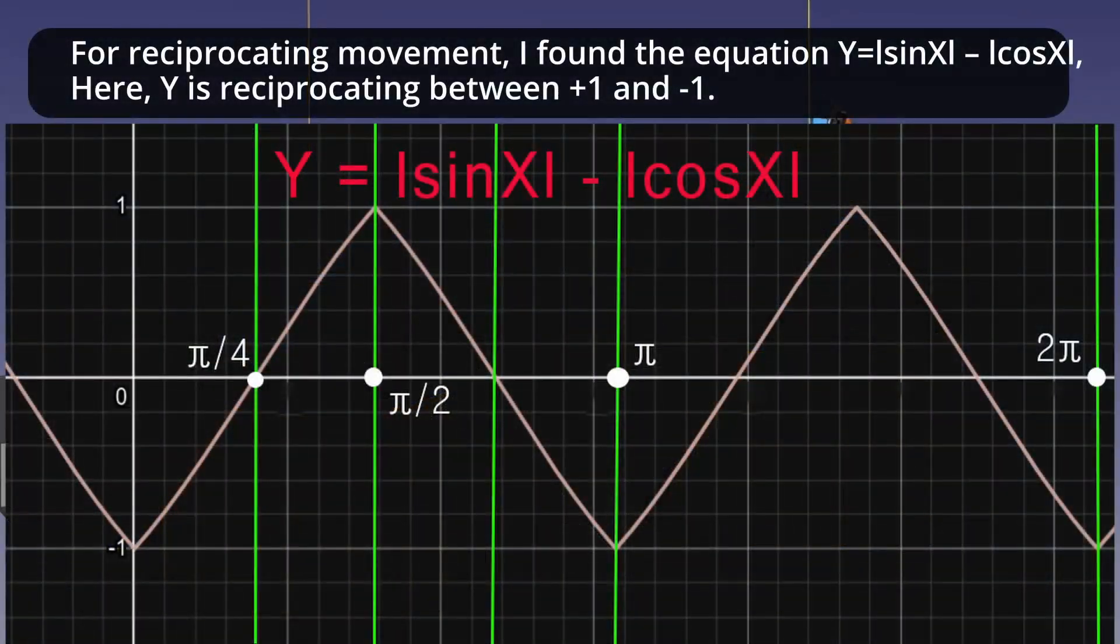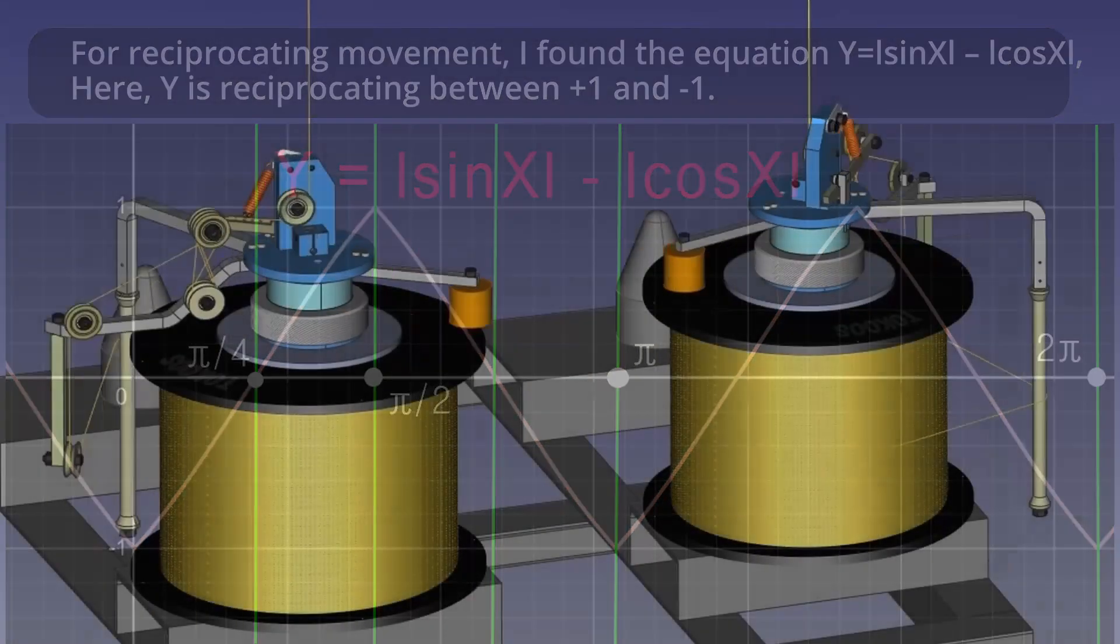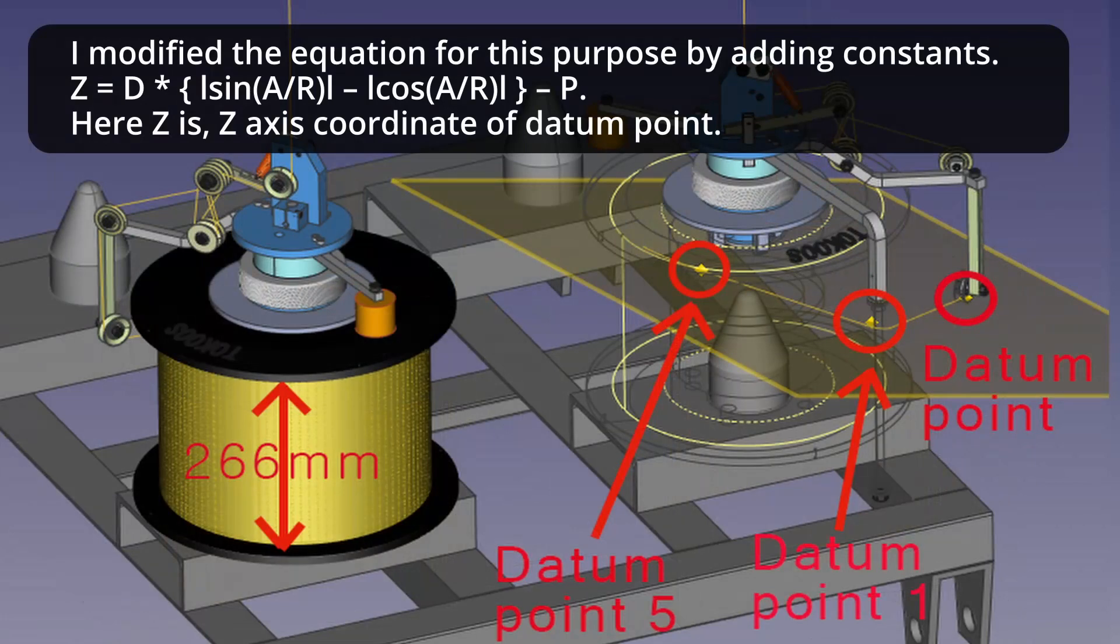For reciprocating movement, I found the equation y equals sine x minus cosine x. Here, y is reciprocating between plus 1 and minus 1. I modified the equation for this purpose by adding constants.